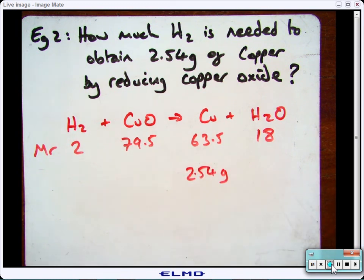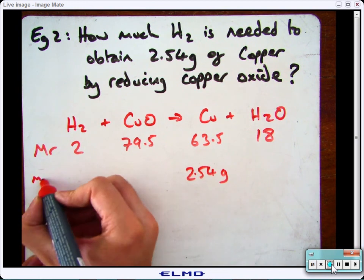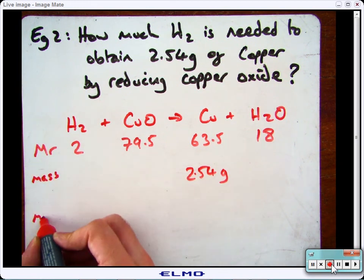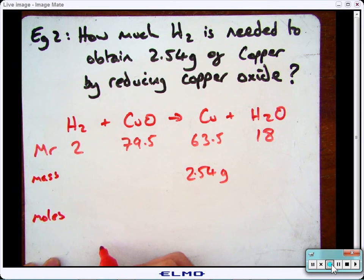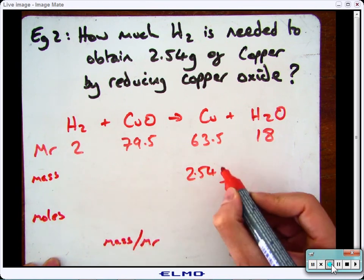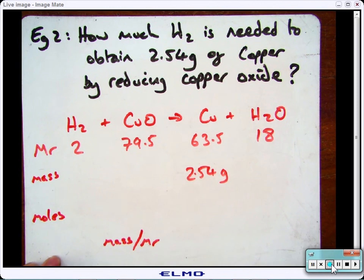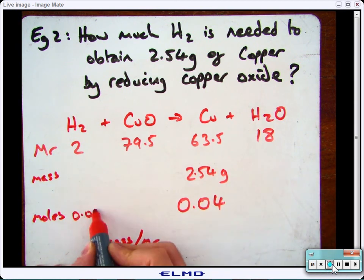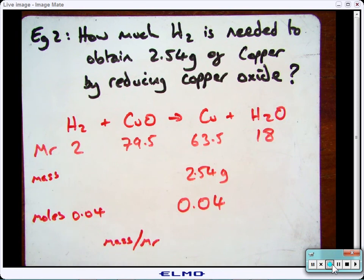And then, do your calculations. So work out the moles, which is mass divided by MR. So it's 2.54 divided by 63.5, which gives me 0.04. Because it's a ratio of 1 to 1 all the way across, I've got 0.04 moles of hydrogen.